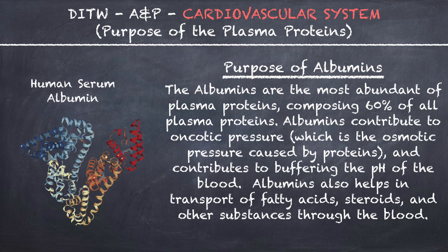The albumins are the most abundant of plasma proteins, composing 60% of all plasma proteins. Albumins contribute to oncotic pressure, which is the osmotic pressure caused by proteins, and contribute to buffering the pH of the blood. Albumins also help in the transport of fatty acids, steroids, and other substances through the blood.